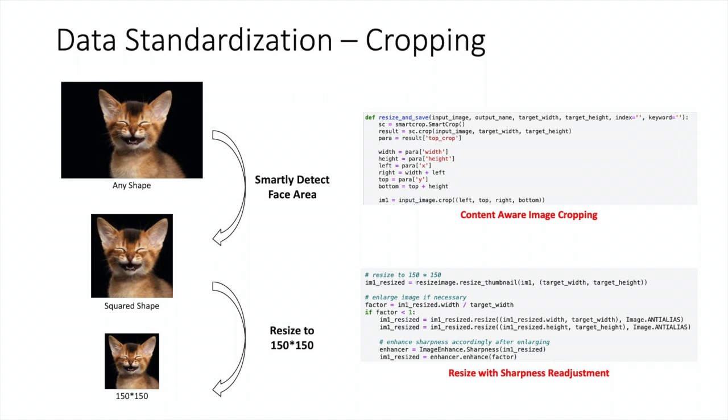The next step is image cropping. We first leverage a package called SmartCrop to conduct content-aware image cropping. As you can see from the example on the left, it automatically locates the face of the cat, and crops the image to a squared one. Then we resize it to a standardized size, which is 150 pixels times 150 pixels. If the original size of the image is smaller than our target size, we'll readjust the sharpness accordingly to better normalize the data.